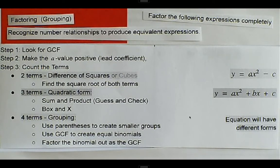We've done difference of squares with two terms. We've done three terms of the quadratic form. And now if we see four terms, then we want to think we want to group. We want to factor by grouping.